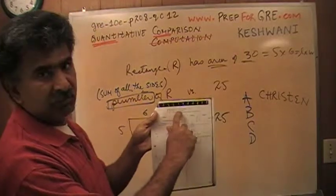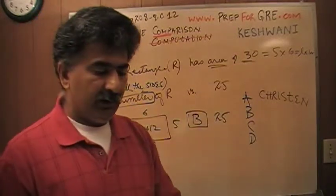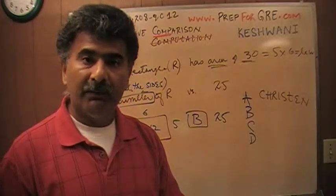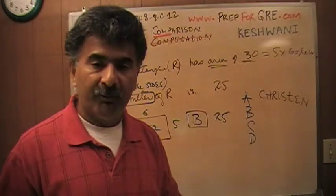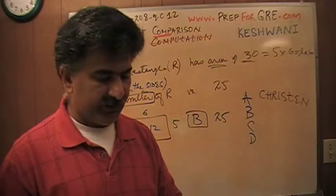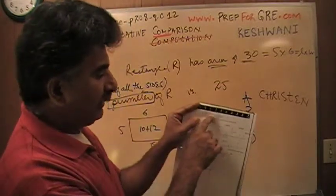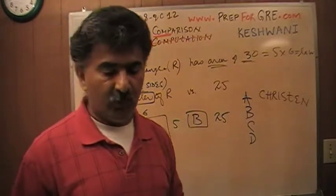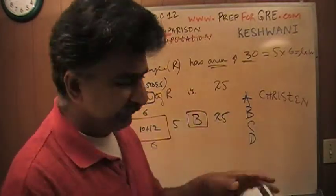When you pick answer choice A in this quantity comparison, what you're claiming is that the quantity in column A is greater. I'm going to read the instruction from the top. It says A if the quantity in column A is greater. Now I'm going to say it differently. I'm going to insert one word. A if the quantity in column A is always greater. That's what you're claiming. They do not tell you that but that's what it means.